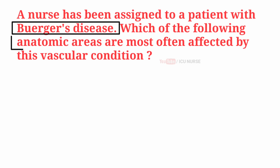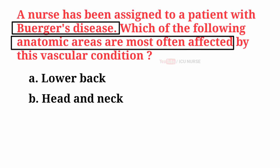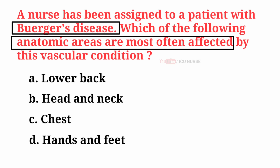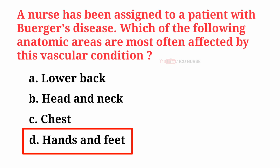Which areas are most often affected by Buerger's disease? A. Lower back. B. Head and neck. C. Chest. D. Hands and feet. And the correct answer is D. Hands and feet.